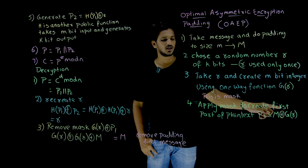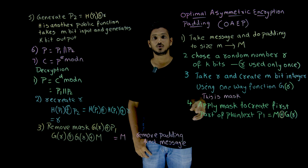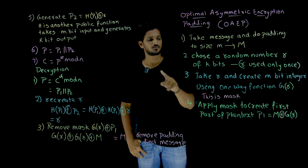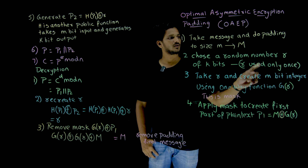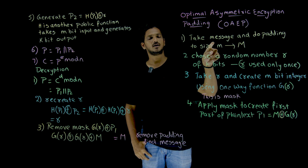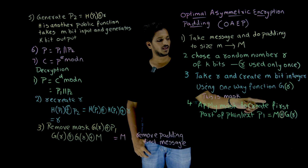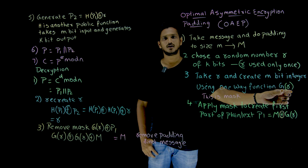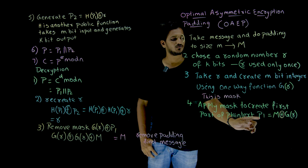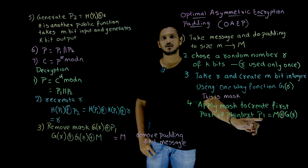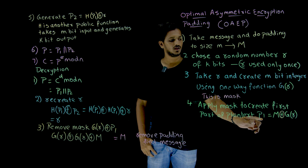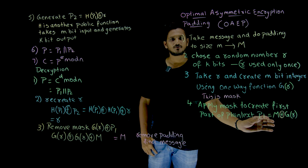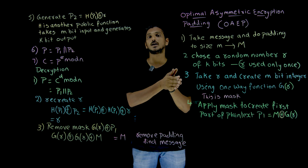Apply the mask to create the first part of the plain text. You are going to generate plain text P which has two parts. The first part P1 is generated by: M (our message with padding) XOR G(R), whatever mask you generated using G(R). This is what we call the first part P1. So P1 = M XOR G(R). Once you have generated the first part, use it to generate the second part.